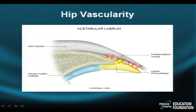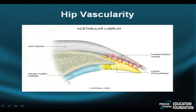The blood supply is via peripheral capsular blood vessels that perforate the outer portion of the labrum. So once it is torn, its ability to repair itself — especially along the hypovascular undersurface — is very limited.